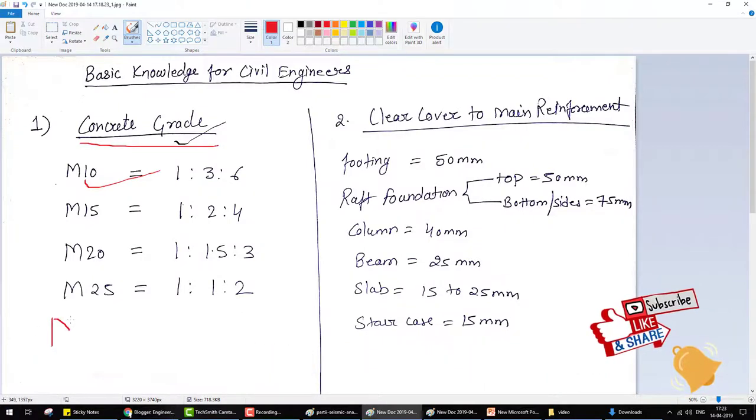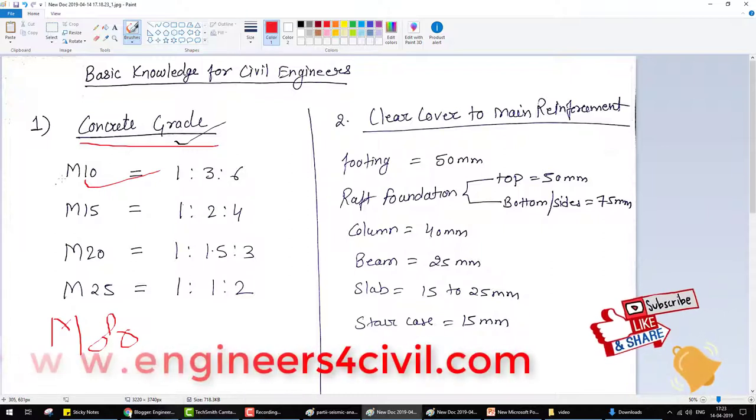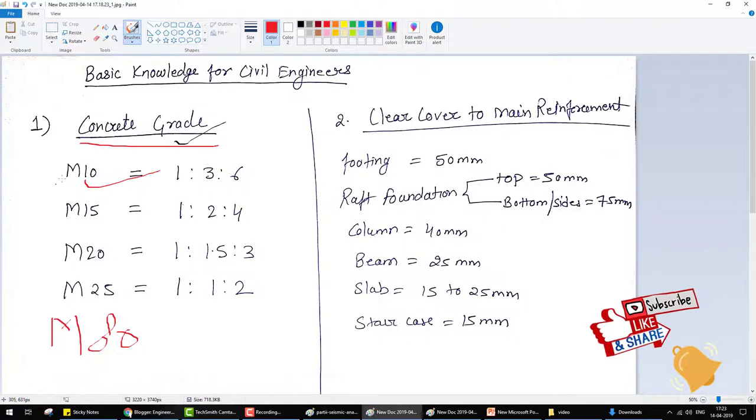Concrete grade above M55 is referred to as high strength concrete. Keep in mind, M refers to mix design. If we make a concrete grade of M10, it's a mixture of these materials.